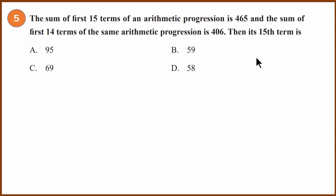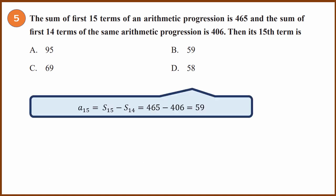Fifth question: arithmetic progression. The sum of the first 15 terms is 465 and the sum of the first 14 terms is 406. Find the 15th term. The 15th term equals the sum of 15 terms minus the sum of 14 terms: 465 − 406 = 59. So S14 plus A15 gives S15, meaning the difference is A15. The answer is 59.